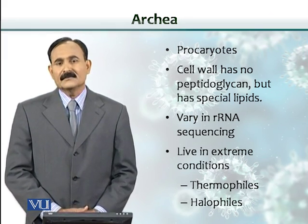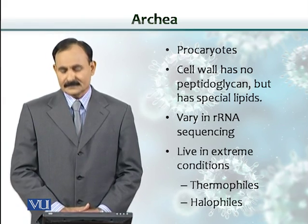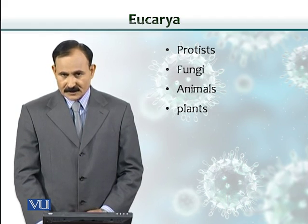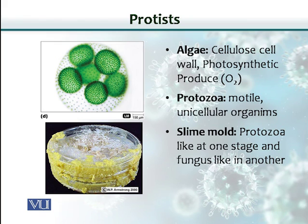Similarly, archaea can survive in very high salt concentrations, and those archaea are called halophiles. Eukarya include protists, fungi, animals, and plants. Protists include algae, which have cellulose in their cell wall and are photosynthetic — they make oxygen. There are also protozoa, which are unicellular organisms, and slime molds. Slime molds behave like protozoa at one stage of their life and like a fungus at another stage.